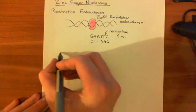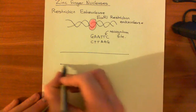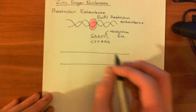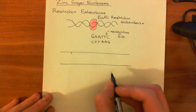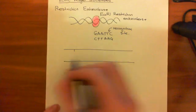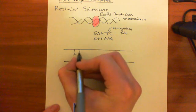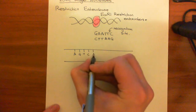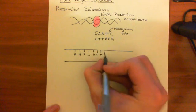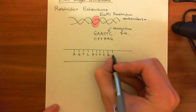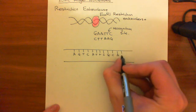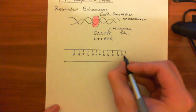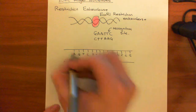So let's say we have some double-stranded DNA. I'm going to put in an arbitrary sequence of letters — it's not important — because you can make zinc finger nucleases that will recognize whatever sequence you like.